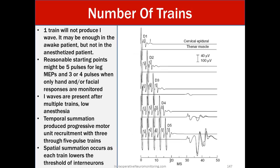The number of trains. One train will not produce an indirect wave or an eye wave. It may be enough in the awake patient but not in the anesthetized patient. Reasonable starting points might be five pulses for leg MEPs and three or four pulses when only hand or facial responses are monitored. Typically that doesn't happen a whole lot but in my experience at least we usually are doing all extremities. Eye waves are present after multiple trains and low anesthesia. Temporal summation produces progressive motor unit recruitment with three through five pulse trains. Spatial summation occurs as each train lowers the threshold for the anterior neurons. So we see the picture on the right at a train of three still just a small response that is unreliably used. We come up to four again now we're getting something replicating and then five we're getting something reliable.